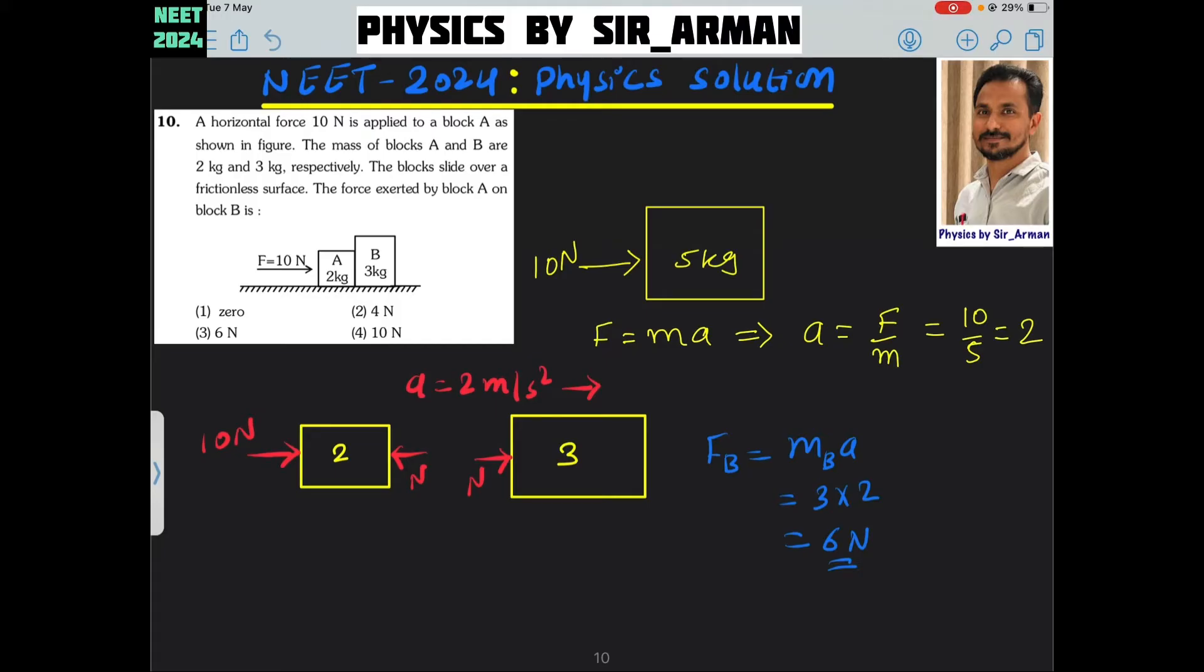This is a very easy question based on contact force. Here, both blocks are on a smooth surface and they are moving with common acceleration. So we can assume 2 plus 3, it is a 5 kg block on which a 10 Newton force is acting.